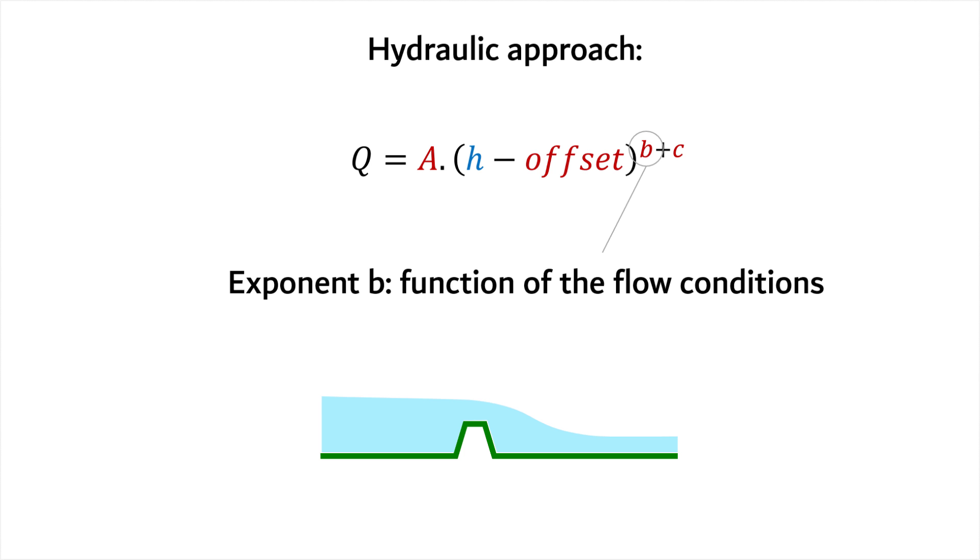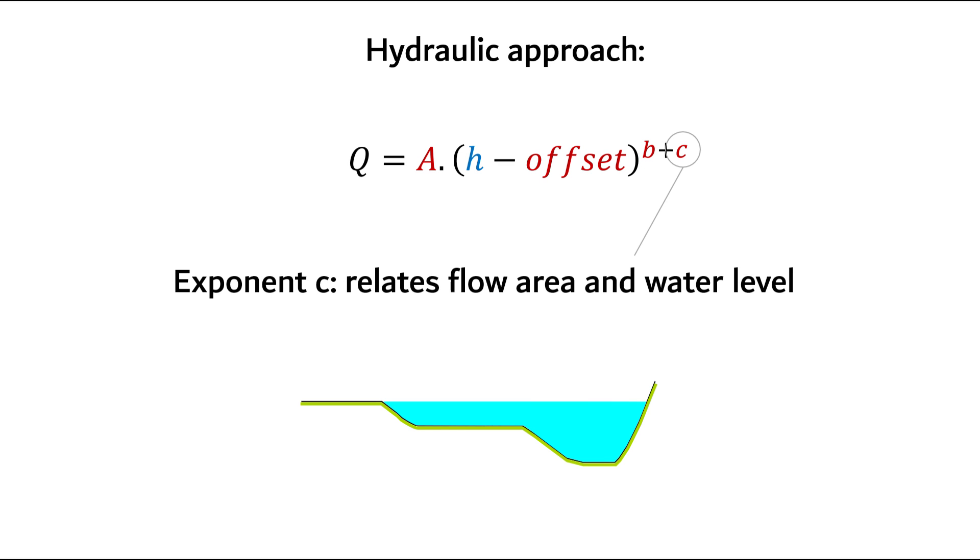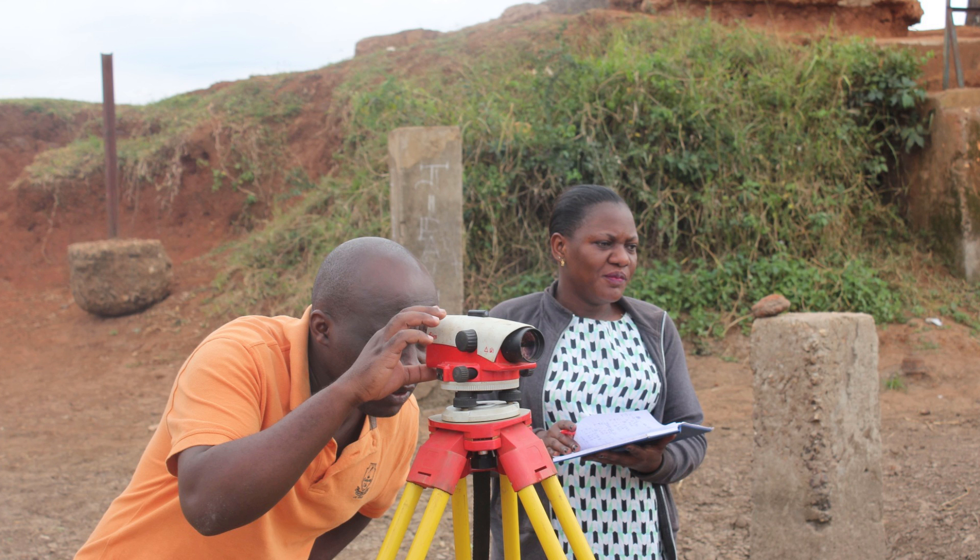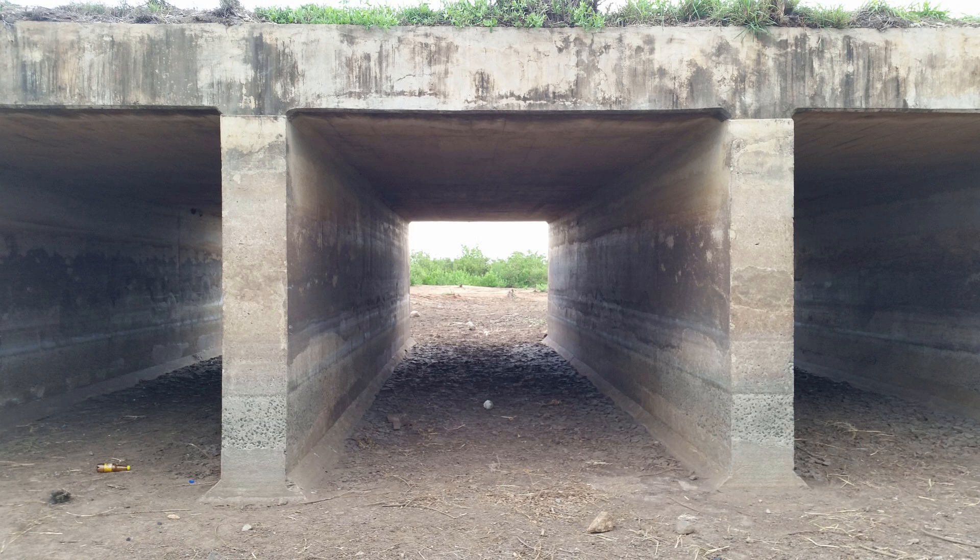Exponent b is a function of the flow conditions. Exponent c relates flow area to water level and can also be calculated with the cross-section. So, by measuring the relevant river properties, we approximate the coefficients of the standard rating equation.